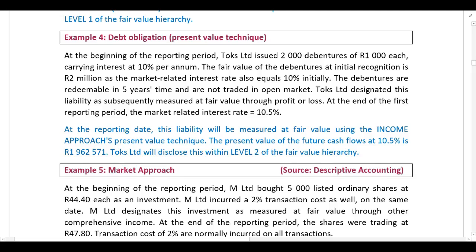At the beginning of the reporting period, Tax Limited issued 2,000 debentures of R1,000 each, carrying interest at 10% per annum. The fair value of the debentures at initial recognition is 2,000,000, as the market-related interest rate also equals 10% initially. If you use this information and calculate the present value, your present value will equal 2,000,000. The debentures are redeemable in five years' time and are not traded in an open market. Tax Limited designated this liability as subsequently measured at fair value through profit or loss.